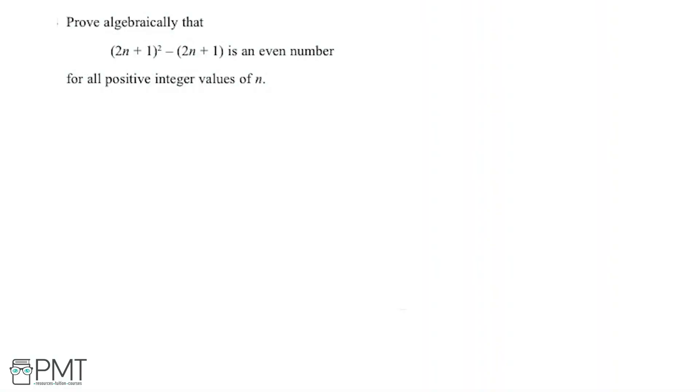This question says we need to prove algebraically that (2n + 1)² minus (2n + 1) is an even number for all positive integer values of n.